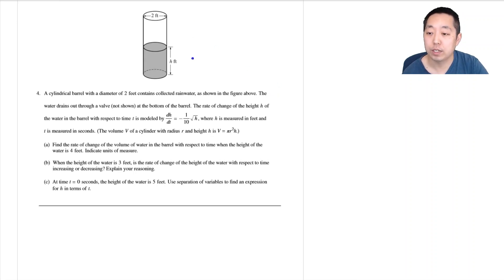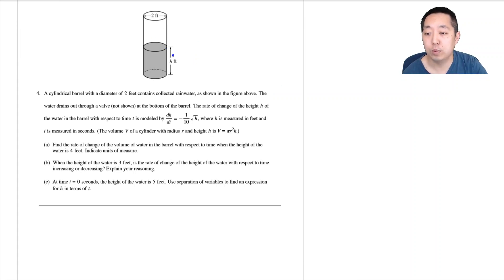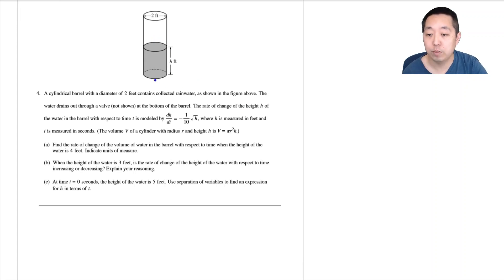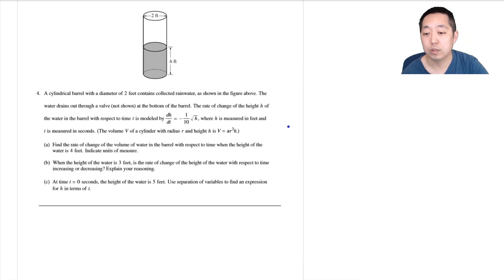A cylindrical barrel with a diameter of two feet contains collected rain water, as shown in the figure. The water drains out through a valve at the bottom of the barrel. The rate of change of the height of the water in the barrel is given — it's in feet per second. The volume of the cylinder is also given. Find the rate of change of the volume of water in the barrel with respect to time when the height of the water is four feet, and include units.